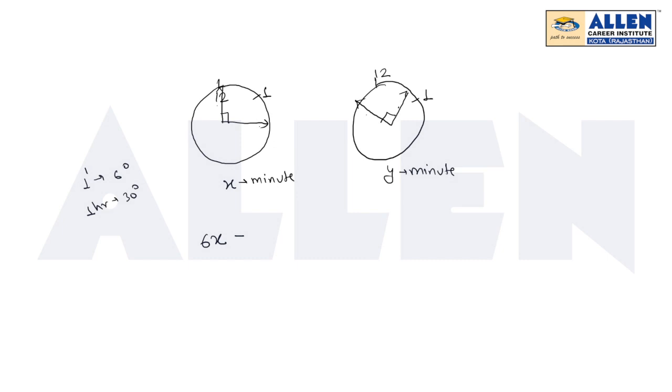Similarly, the hour hand: if x minutes pass, that's x upon 60 hours, so multiply by 30 degrees. This equals 90 degrees.